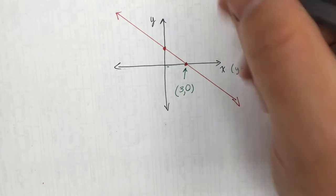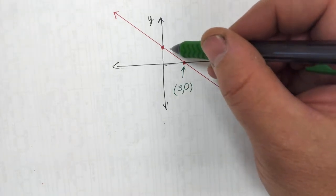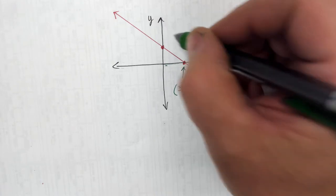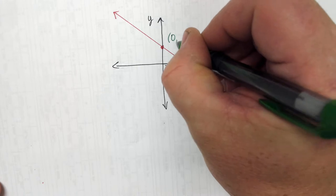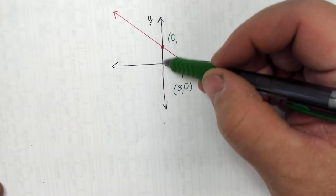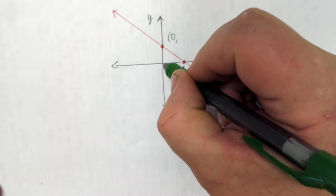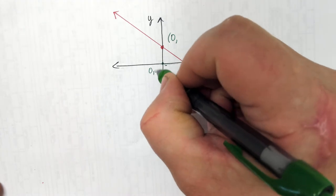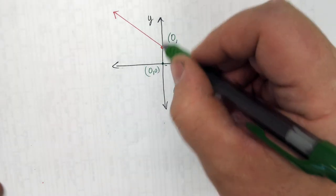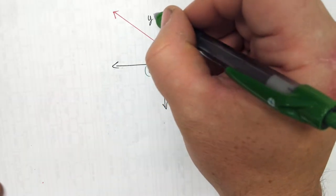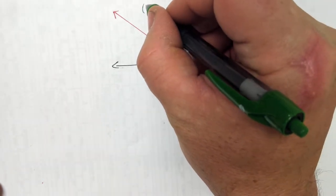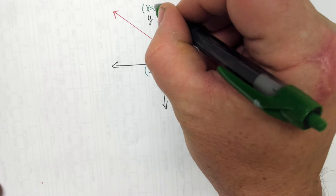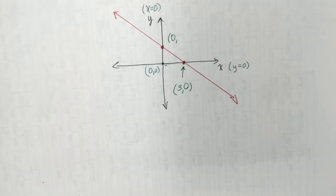For this point on the y-axis, x has to be zero. Everywhere on the y-axis, x is zero — the y-axis is the equation x equals zero, and it has an undefined slope. The x-axis has a slope of zero. Mr. Cuevas, what number do you want for y? Five.